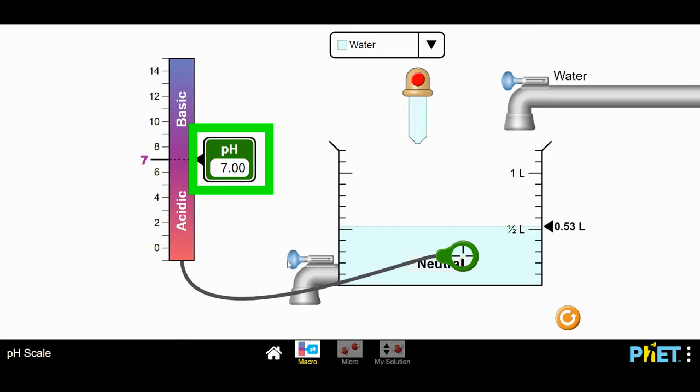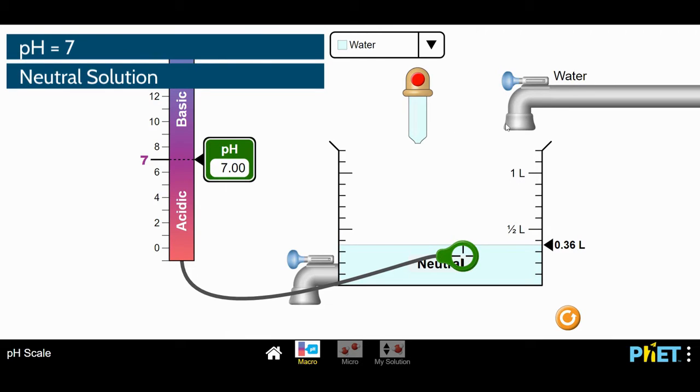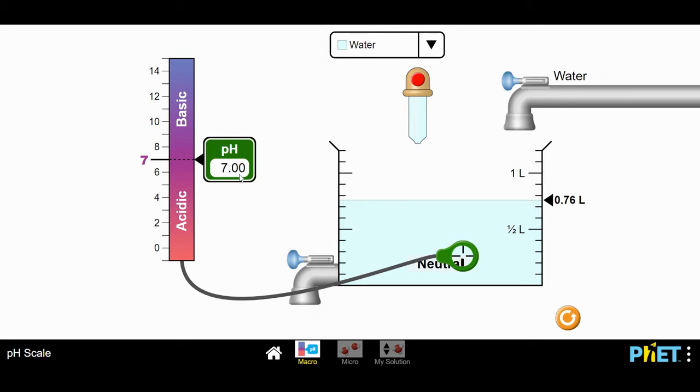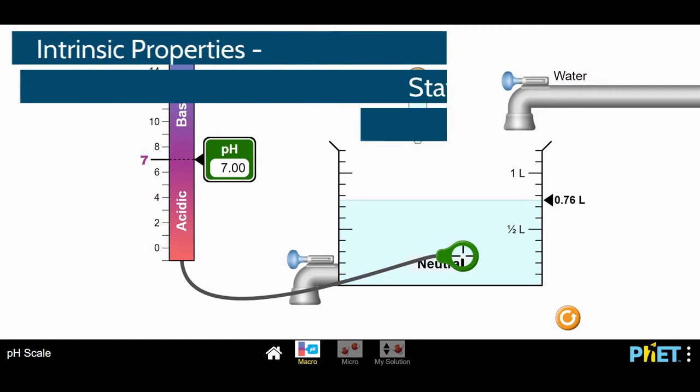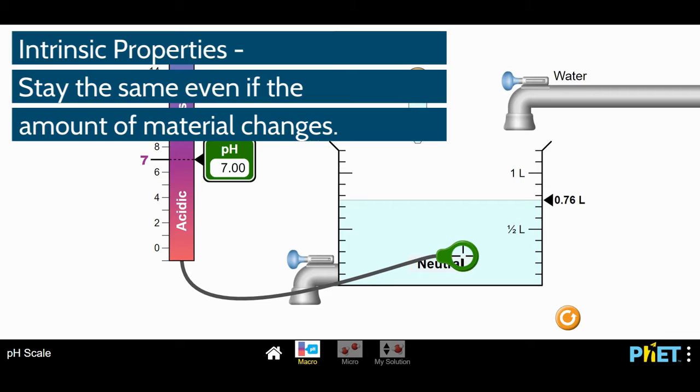Now, what's going to happen to pH if I remove some water? You can see that the pH stays at a level of 7. If I add water, you can see that the pH still stays at a level of 7. The reason for this is pH of water is an intrinsic property of the water. So the pH level does not change based on how much water we have. So if I have pure water, no matter how much, it will always have a pH value of 7.